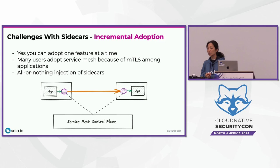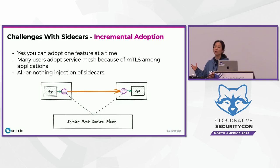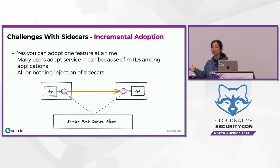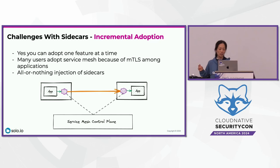Whenever there is an Envoy CVE, you have to restart your application pod to pick up the new Envoy version — that's operational complexity. Not everything is supported in the sidecar world; for example, Kubernetes jobs might be ending while your sidecar remains running. There's also an incremental adoption challenge: you may just want mutual TLS, but you're still carrying the entire Envoy-based sidecar with Layer 7 support, which is where most Envoy CVEs come from.